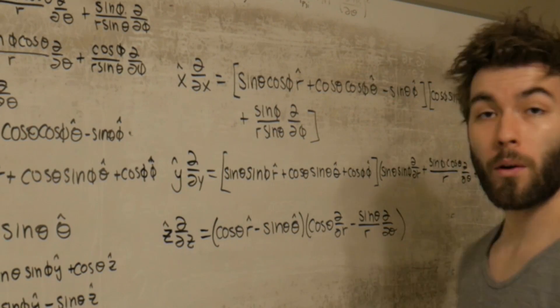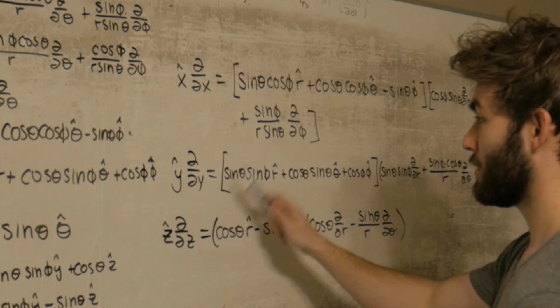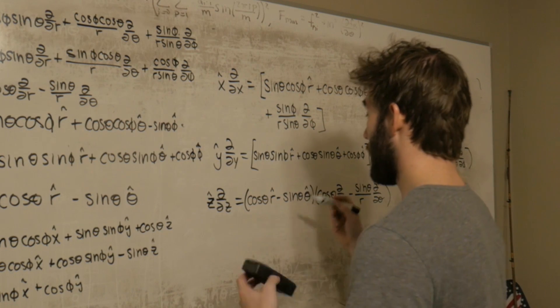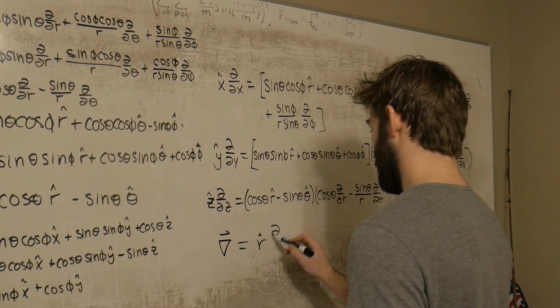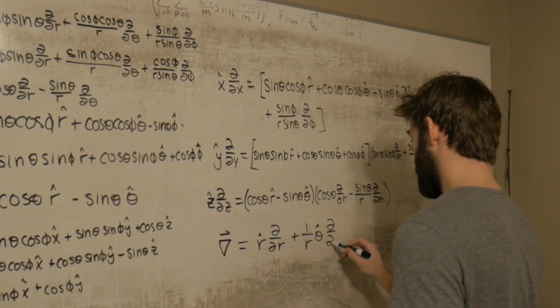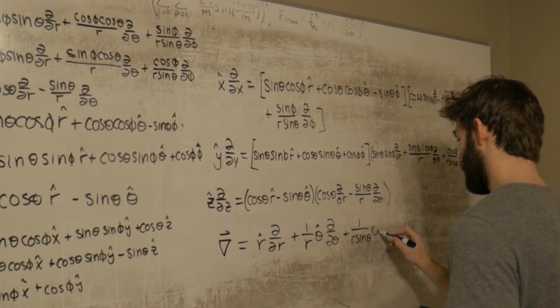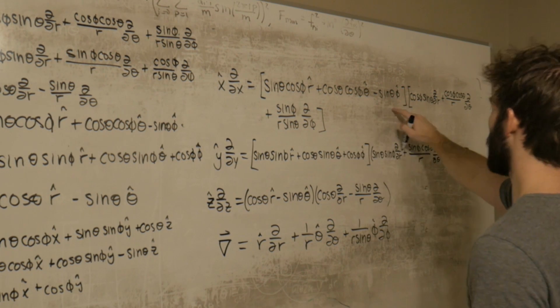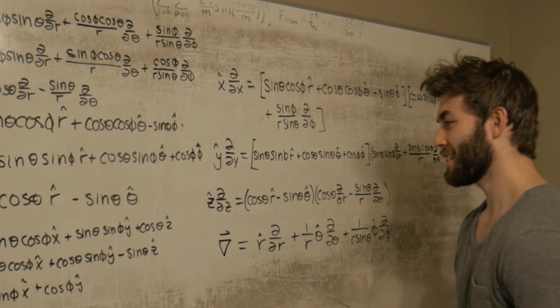Now again, this isn't a video on how to do algebra. This is a thought process video on how to go from point A to point B, so I'm not going to go through all of this tedious algebra, but I'm going to show you what happens when all the dust settles. After all the algebra is carried through, what we get is that del is equal to r hat d/dr plus one over r theta hat d/dθ plus one over r sine theta phi hat d/dφ. It's kind of hard to believe that after all of this is foiled out and then added to each other, that you get something as simple as this. But I leave it... I can't believe I'm about to say this. I leave this as an exercise for the watcher or for the viewer to carry out all that algebra.